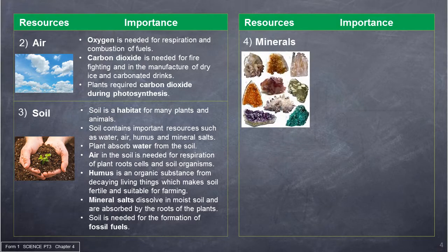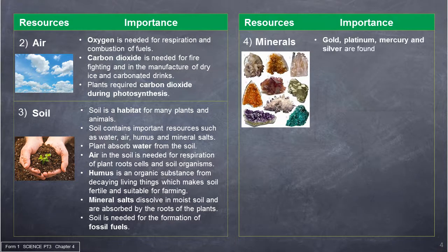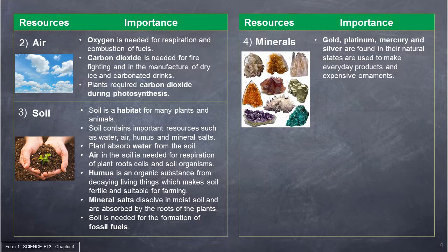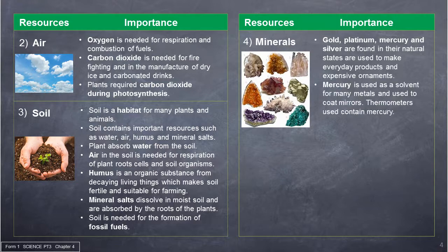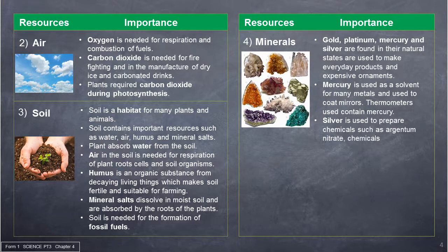The importance of minerals: gold, platinum, mercury and silver are found in their natural states and are used to make everyday products and expensive ornaments. Mercury is used as a solvent for many metals and used to coat mirrors. Thermometers contain mercury. Silver is used to prepare chemicals such as silver nitrate, which are chemicals used in photography.